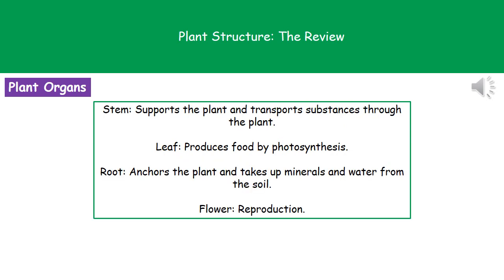Plants do have organs, so we need to remember four of them and what they actually do. The first one is the stem, which supports our plant upright and also allows substances to be transported through the plant. The second organ is the leaf, which produces food via the process of photosynthesis. The third is the root, which anchors the plant into the ground and takes up minerals and water from the soil. And finally we have the flower, which is involved in the reproduction of our plant.